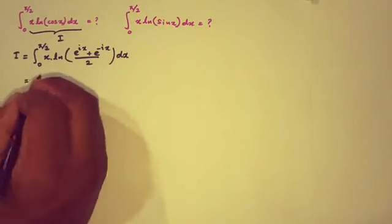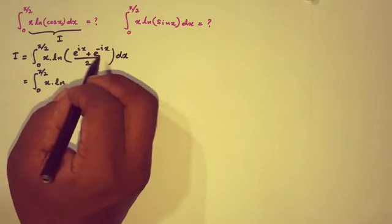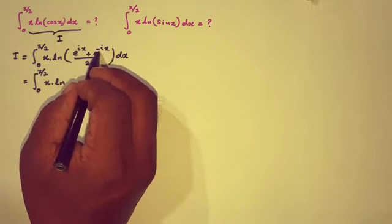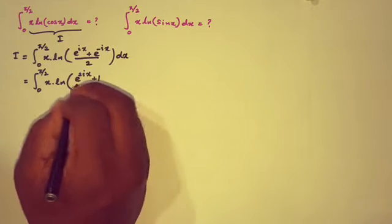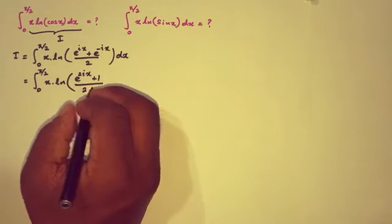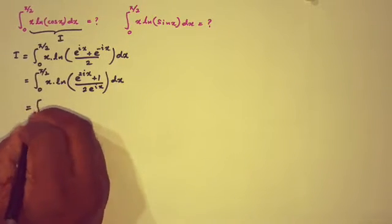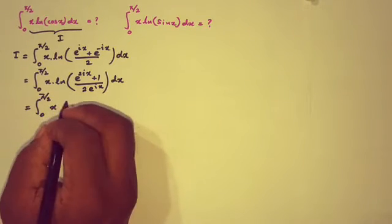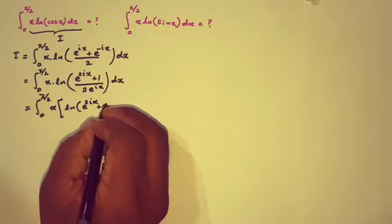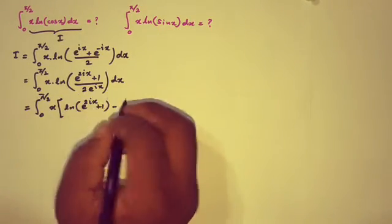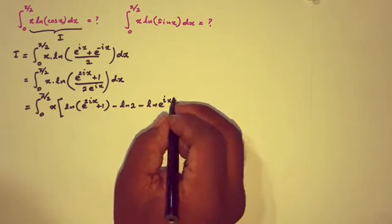Then we can simplify the integral from 0 to π/2 of x times the natural log. Here e^(-ix) equals 1/e^(ix), so we can write (e^(2ix) + 1) / (2 · e^(ix)). According to properties of natural log, we get x times [ln(e^(2ix) + 1) minus ln(2) minus ln(e^(ix))] dx.